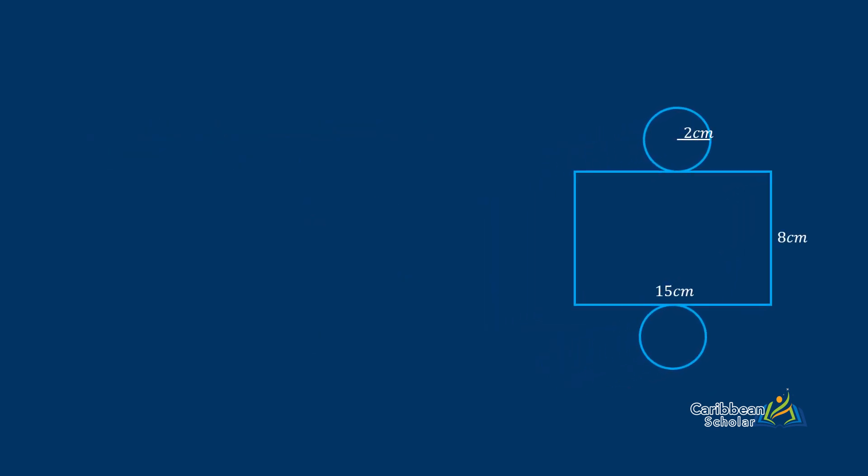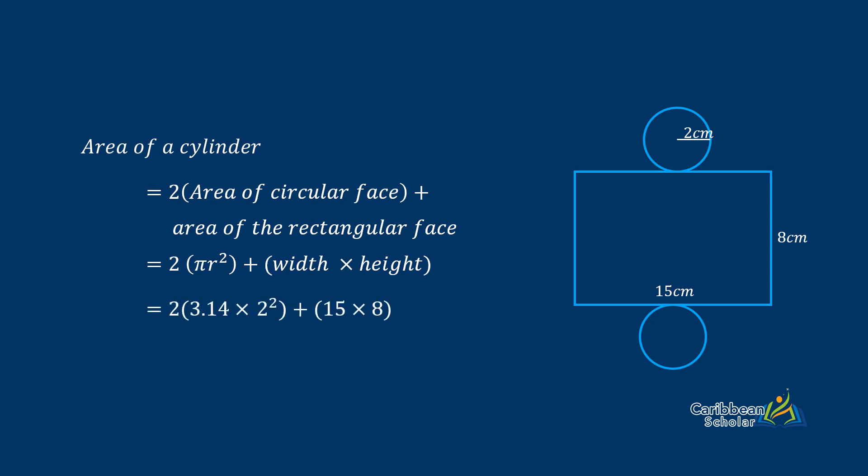To find the area of the circular faces and add this to the area of the rectangular face, we have two times pi r squared plus width by height. And we have two by 3.14 times two squared plus fifteen by eight, and we get our final answer of 145.12 centimeters squared.